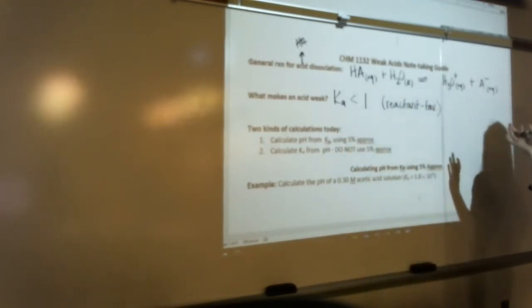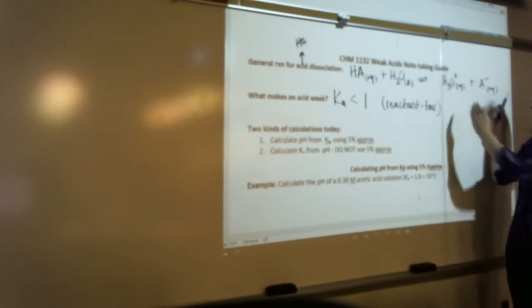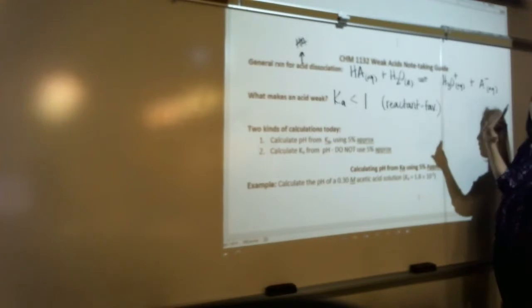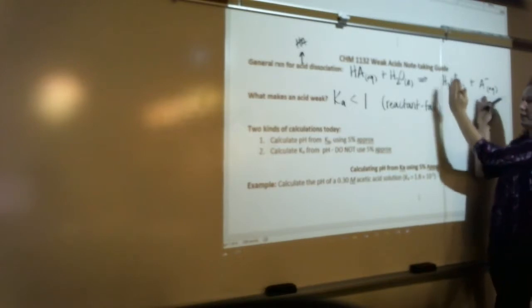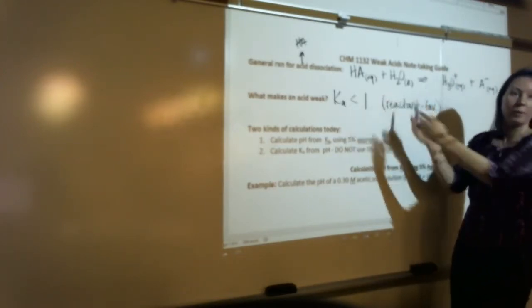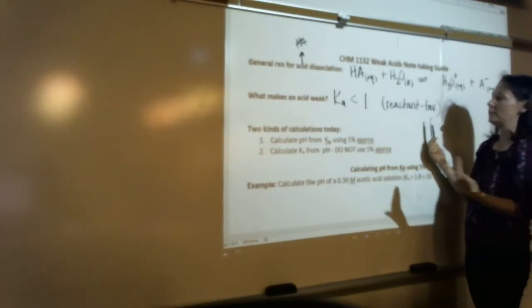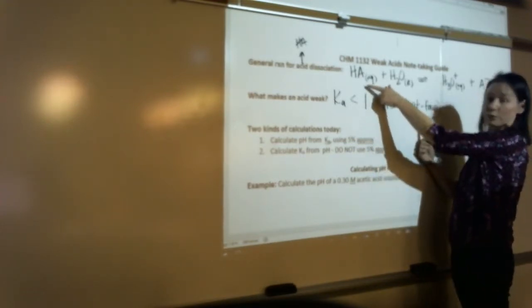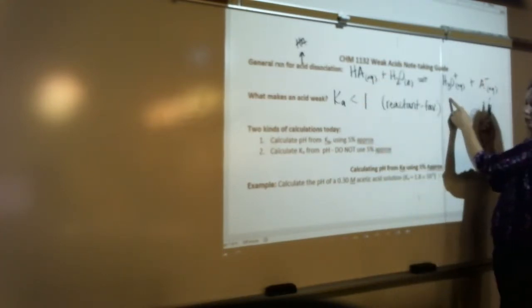Think back to Monday when we did strong acid calculations, right? When we said, okay, if you've got a 0.5 molar solution of HCl, that means you've got 0.5 molar of H3O+, right? Because it's 100% dissociated. For a strong acid, Ka is significantly greater than one. So you've got 100% products, 0% reactants. But I said, when we get to weak acids, that's going to totally go away. Because weak acids are reactant favored, right? So that means at equilibrium, you've got mostly this and a small amount of this.